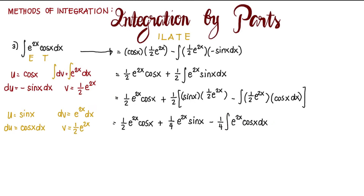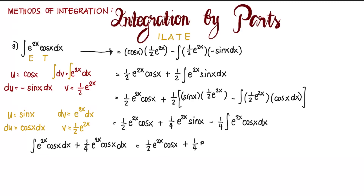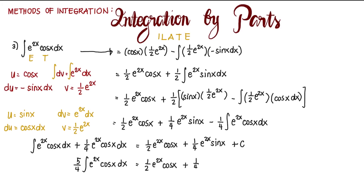We can transpose the minus 1/4 term to the left side, giving us the integral of e to the power of 2x cosine x dx plus 1/4 integral of e to the power of 2x cosine x dx, leaving behind 1/2 e to the power of 2x cosine x plus 1/4 e to the power of 2x sine x plus C. Adding these, 1 plus 1/4 equals 5/4, so 5/4 times the integral of e to the power of 2x cosine x dx equals 1/2 e to the power of 2x cosine x plus 1/4 e to the power of 2x sine x plus C.